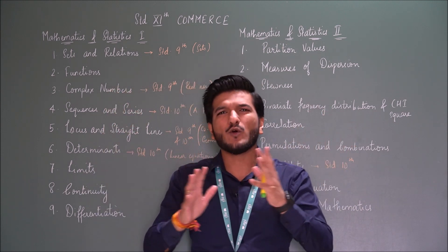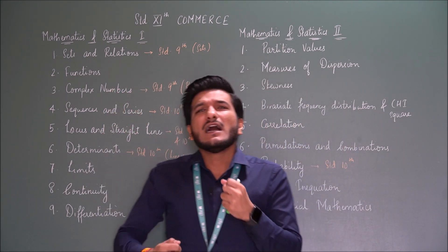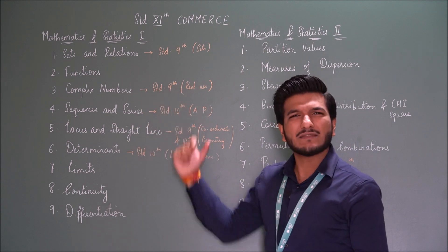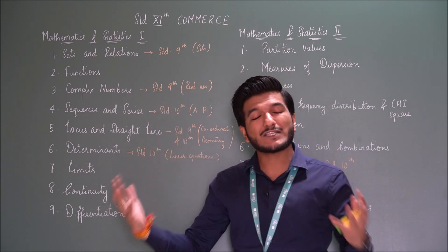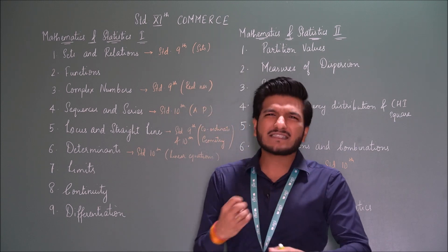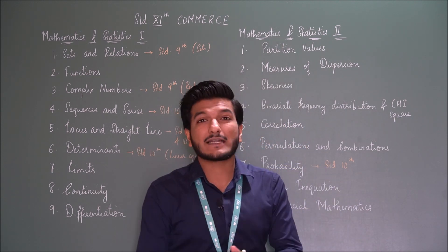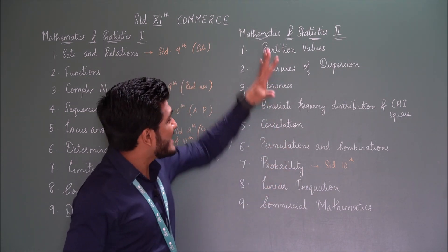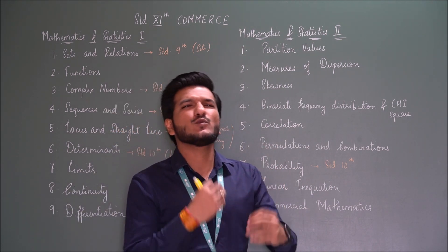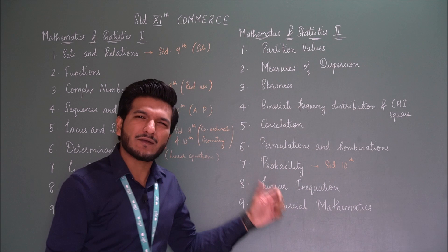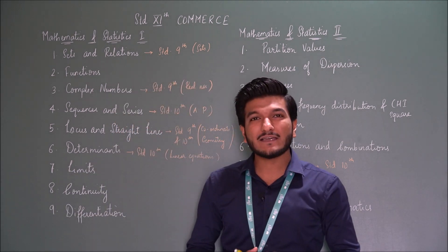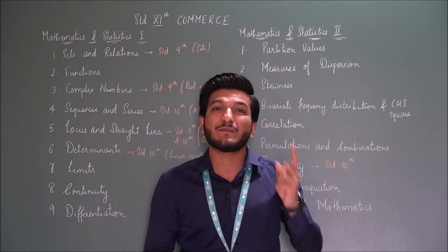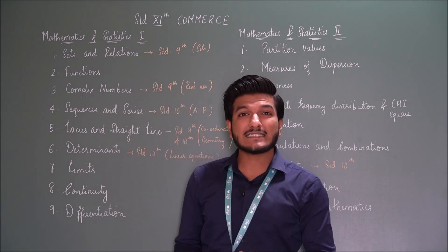Just like algebra and geometry were there before, here Part 1 deals with algebra, geometry, set theory, number system, functions, and calculus. Maths 1 covers algebra, geometry, number system, calculus, set theory, and functions. Maths 2 is more focused on statistics, covering all the new topics — and probability, permutation, and combination also come under it. Statistics, which was just the last topic in 9th or 10th maths, has now become a full subject — Mathematics and Statistics Part 2.